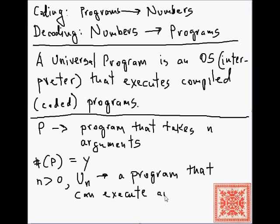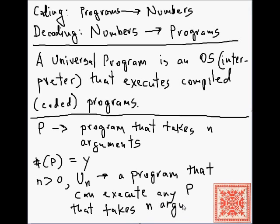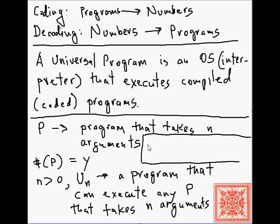Why are we interested only in n greater than zero? Programs with zero arguments can be treated as programs that take some positive number of arguments and simply ignore all of them. So we have a sequence of universal programs: programs that can run any program with one argument, two arguments, three arguments, and so forth.